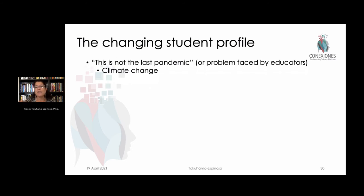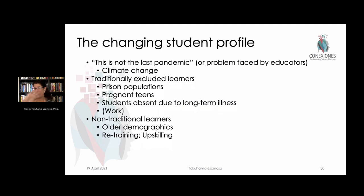Can we learn to leverage some of these technological pieces in the best way possible so that most of our students will be able to thrive independent of whether another pandemic comes or climate change occurs? This also brought attention to other populations traditionally excluded—like people in prison, pregnant teens, people absent for long-term illness, or kids who drop out to work and supplement their parents' income. Many of them ended up thriving in the newly designed way of having education online.